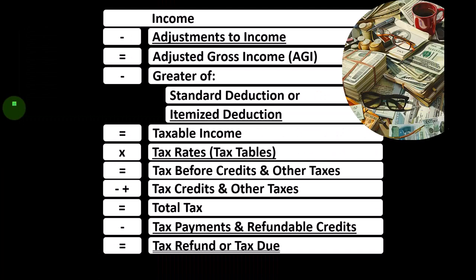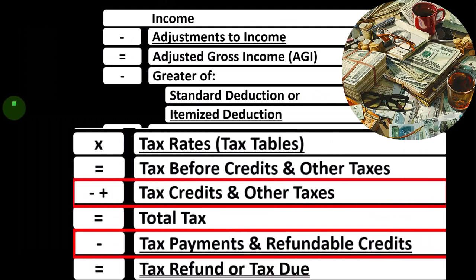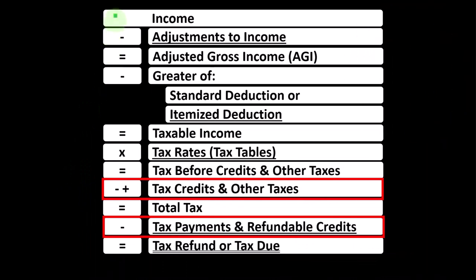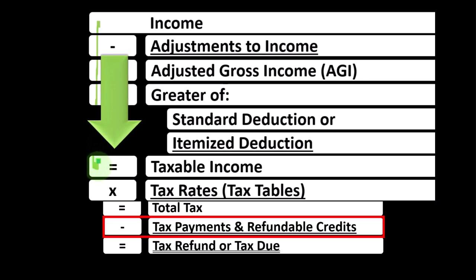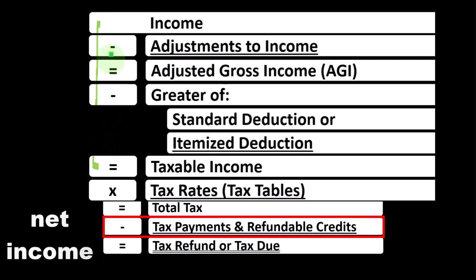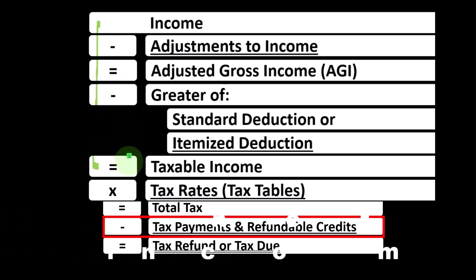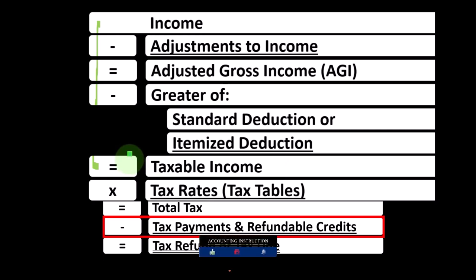Looking at the income tax formula, we're on the second part — the credit line items. Remembering the first half of the income tax formula is basically a funny income statement. Most income statements have income minus expenses resulting in net income. Here we have income minus various deductions resulting in taxable income, which is basically the bottom line of the income statement part of the formula.